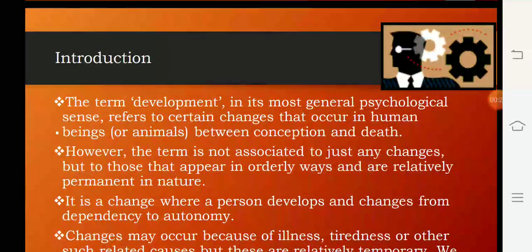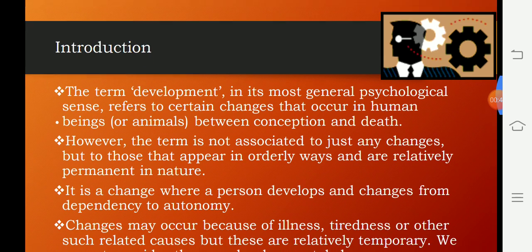Introduction. The term Development in its most general psychological sense refers to certain changes that occur in human beings or animals between conception and death. However, the term is not associated with just any changes, but to those that appear in an orderly way and are relatively permanent in nature.